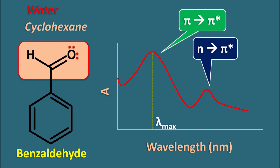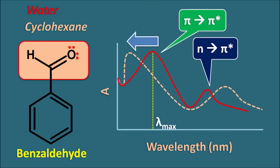Now let us take another solvent — cyclohexane, which is a non-polar solvent. We get a spectra in the presence of cyclohexane showing two peaks again, one corresponding to pi to pi* and another to n to pi* transition. But in the case of pi to pi* transition, you can observe a shift of the peak to shorter wavelengths, meaning the lambda max value is decreased. In the case of n to pi* transition, lambda max is increased to longer wavelengths.